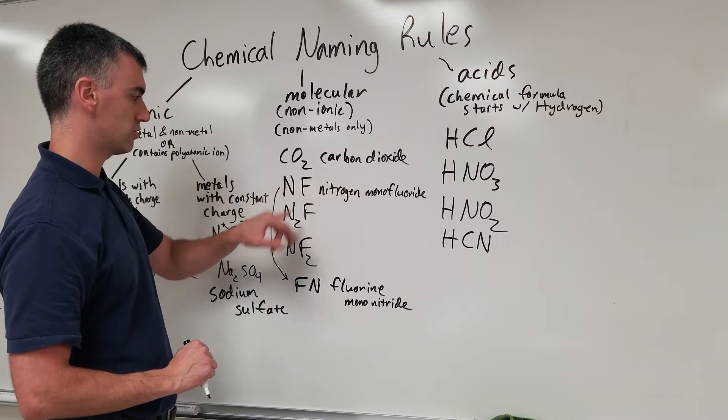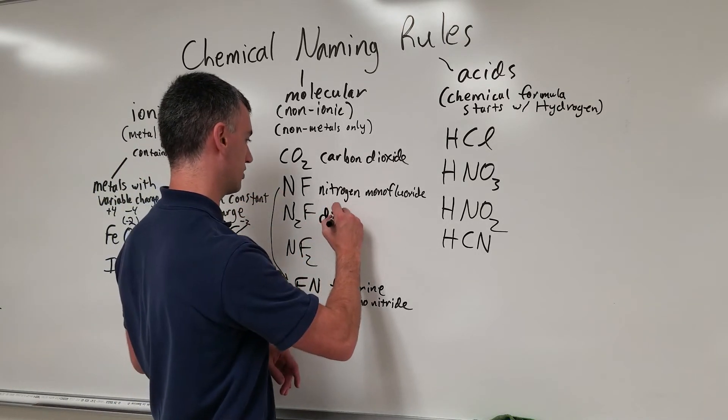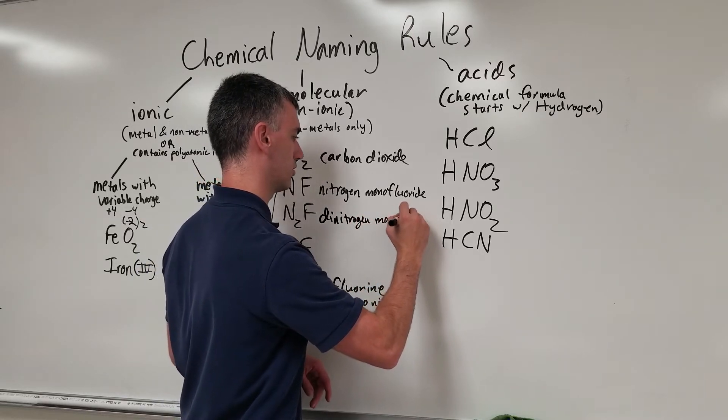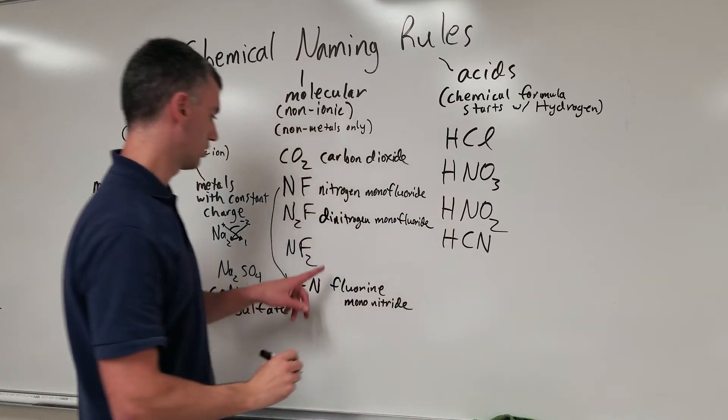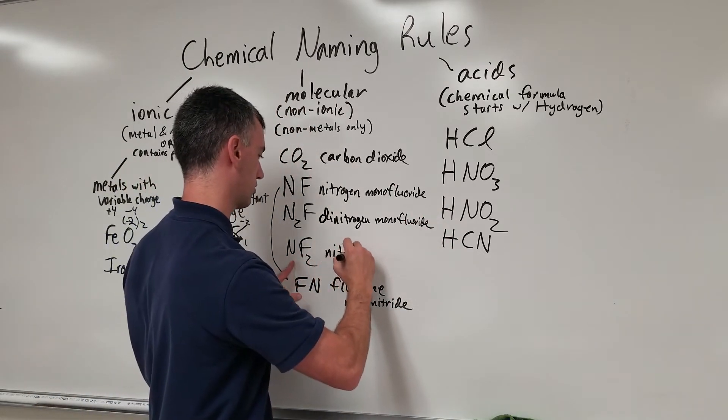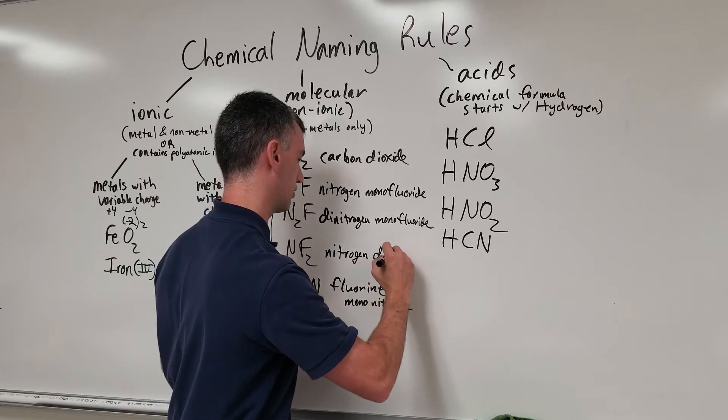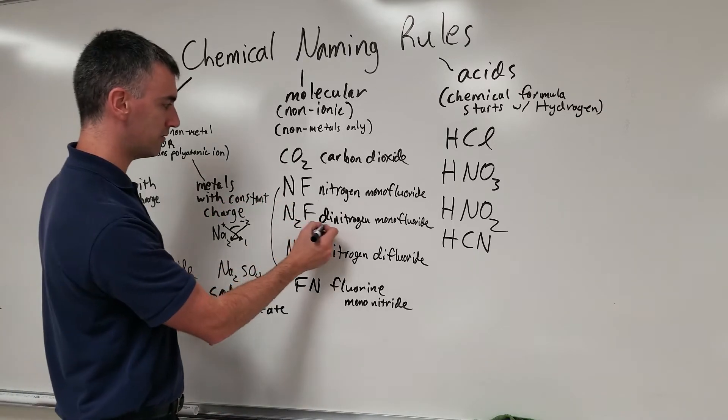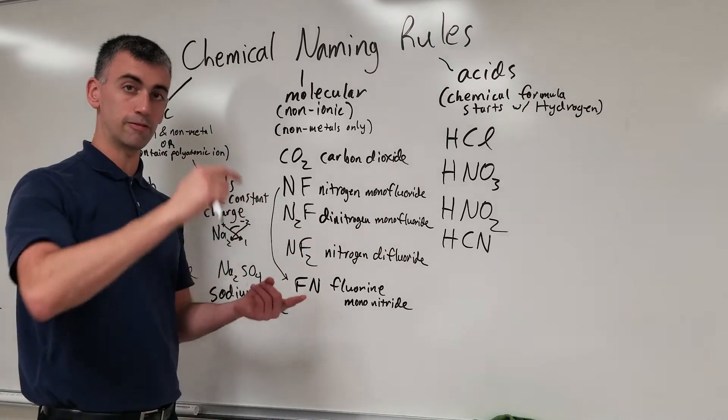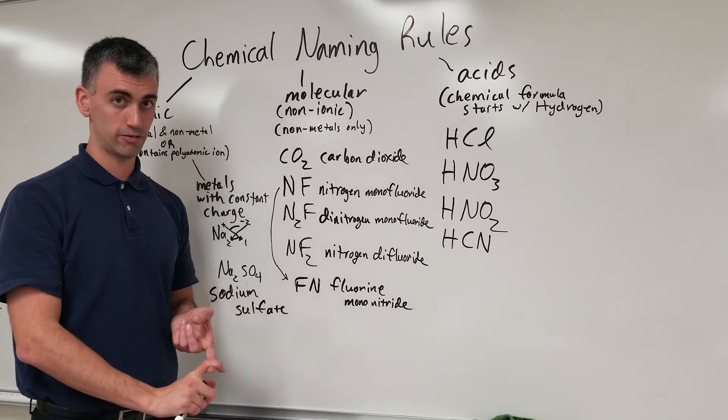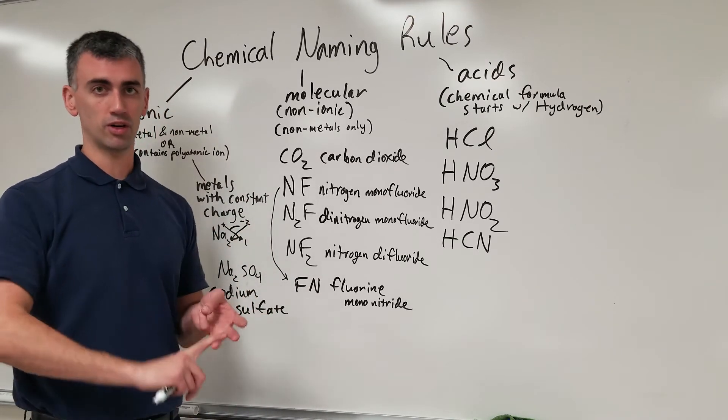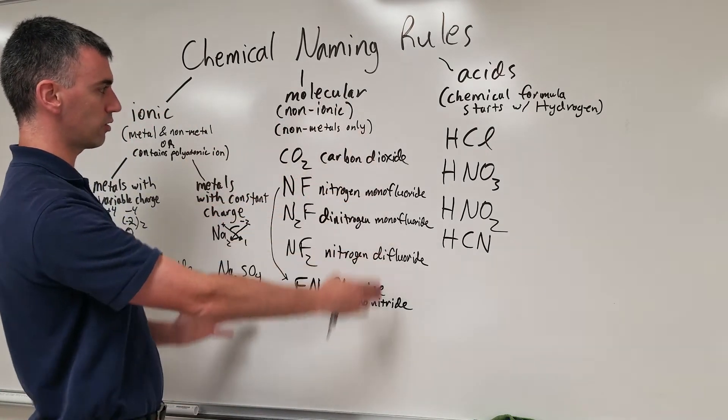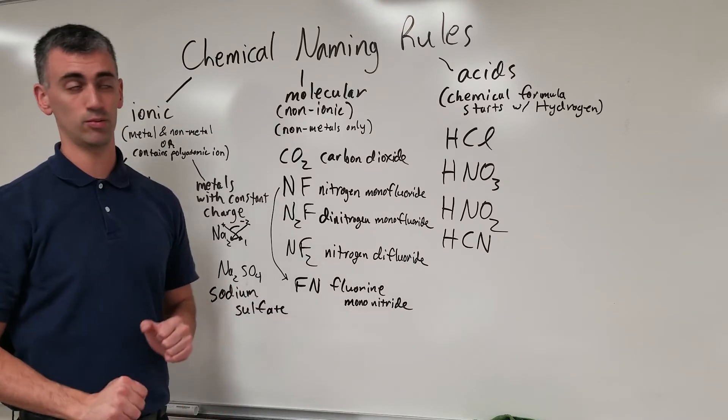If there's two, now this is dinitrogen monofluoride. Or here you have nitrogen difluoride. These Greek prefixes, di, mono, whatever, are for non-ionic only. Make sure you're familiar with mono meaning one, di meaning two, tri meaning three, tetra meaning four, etc. It's all on the list. That's your quick overview of molecular non-ionic naming rules.